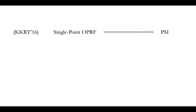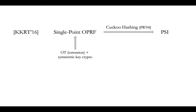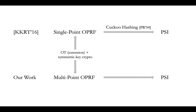Now let's move on to the more technical part. Our starting point is the KKRT PSI, which is computationally very efficient, and their major building block is a primitive called single-point OPRF. They constructed a single-point OPRF from OT extension and symmetric key cryptographic operations only, so overall it is computationally very efficient. However, to construct PSI from single-point OPRF, they need to use a data structure called Cuckoo hashing, and that's why they require a bit more communication. In our work, we construct PSI from another primitive called multi-point OPRF, so that we can get rid of the Cuckoo hashing and reduce the overall communication. We can also construct multi-point OPRF from OT extension and symmetric key crypto operations only, so our protocol is still computationally very efficient.